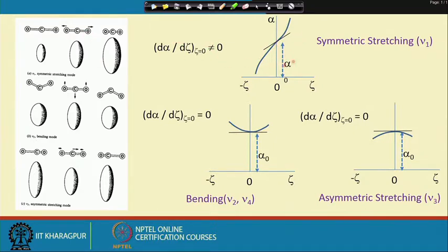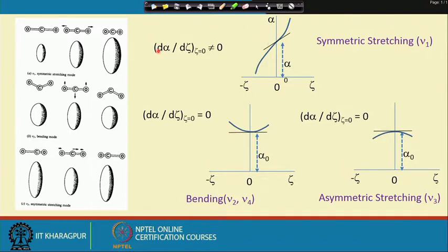For CO2 undergoing symmetric stretching, the displacement is represented by xi — either compression or extension. What happens to the polarizability alpha during this stretching is plotted against this coordinate. When the displacement xi is exactly 0, the slope d(alpha)/d(xi) is not equal to 0, as shown by the tangent drawn here — this is the symmetric stretching situation.